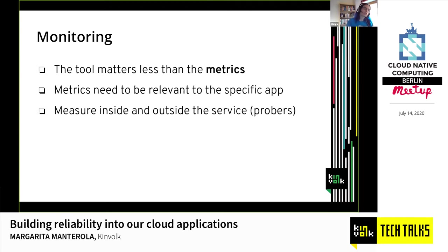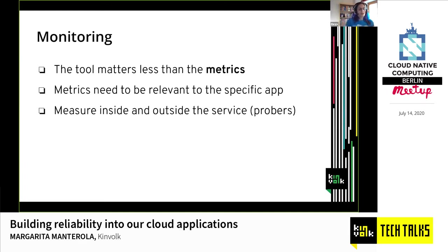It's not just enough to measure from the inside — you also want to measure from the outside, because your service could be serving an awesome website but if nobody can reach it, it's not useful. That's what probes are for — you can run them yourself or use a third party. If your application is global, you want probes all over the world, not just in your country. You need to know if it works for someone connecting from South Africa or Brazil.